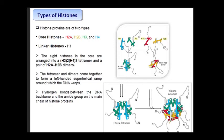The tetramer and dimer come together to form a left-handed super helix wrapped compound around which the DNA is wrapped. Here we can see H3-H4 and H2A-H2B—they interact with one another and form this particular structure upon which the DNA is coiled or wrapped. Hydrogen bonds form between the DNA backbone and the amide group on the main chain of histone.